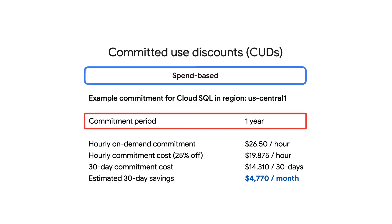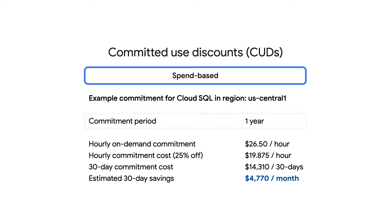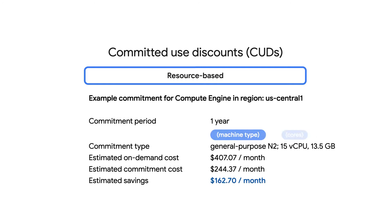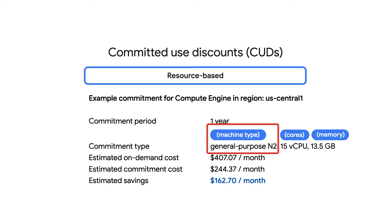For some services, like Cloud SQL, the CUD is purchased for a specific region and is applied towards all service usage within that region. Other cloud services apply spend-based CUDs towards all usage across all regions. Resource-based CUDs, on the other hand, provide a discount in exchange for your commitment to run a certain amount of resources continuously each month. For example, Compute Engine CUDs are measured in terms of the amount of resources, such as vCPUs and memory, and work on most Compute Engine machine types, including predefined and custom machine types.